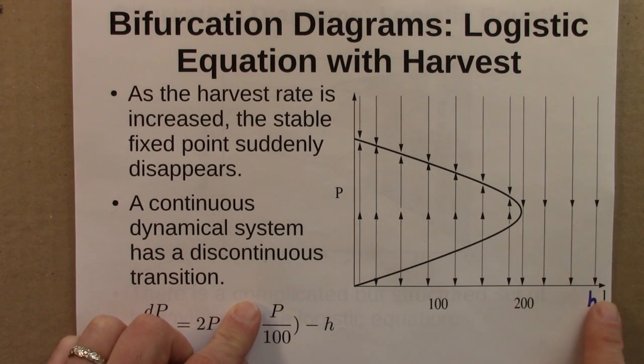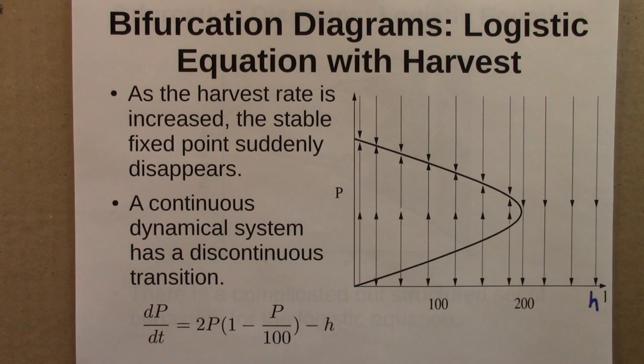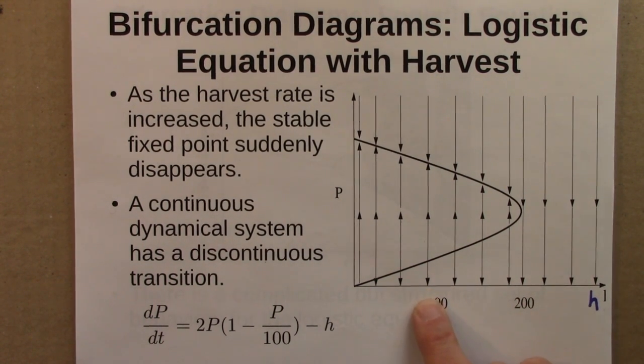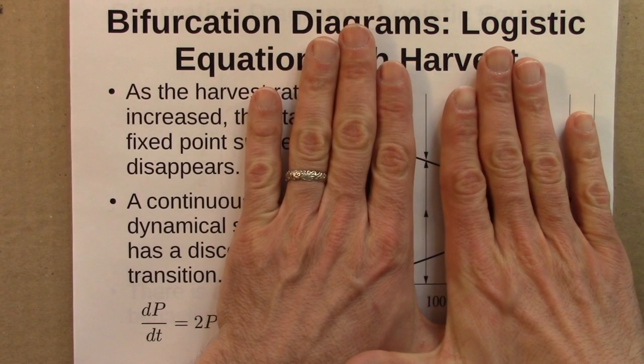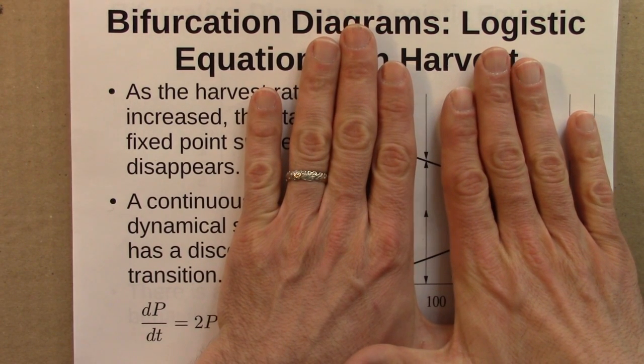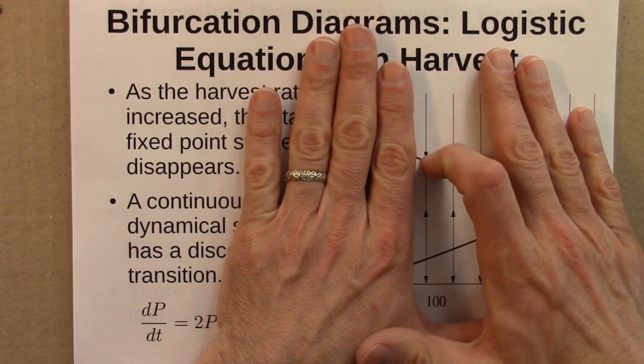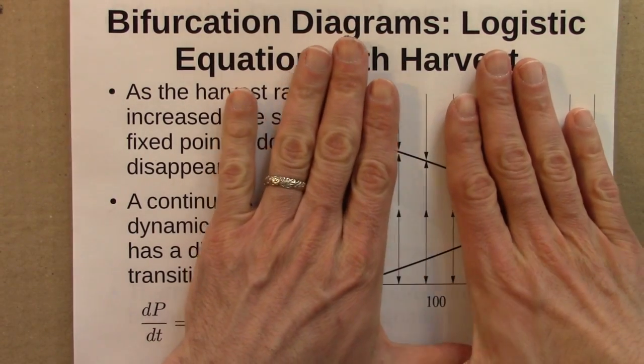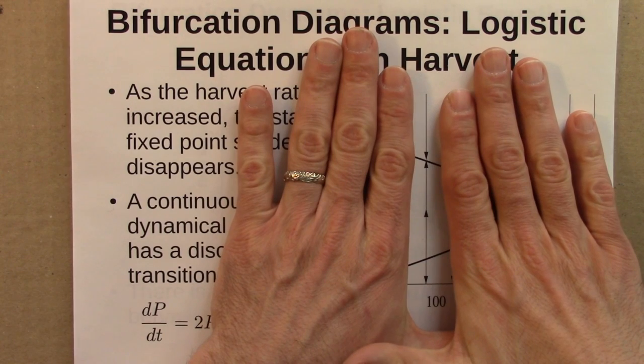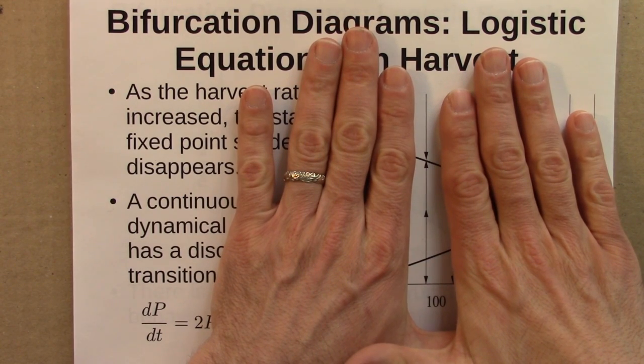h is here, it goes from 0 to 100 to 200 and so on. And so a way to interpret this is suppose you wanted to know what's going on at h is 100. Well I would try to focus right on that value and I can see, aha, it looks to me like there's an attracting fixed point here and a repelling fixed point there. So there are two fixed points, one of them attracting, one of them repelling.